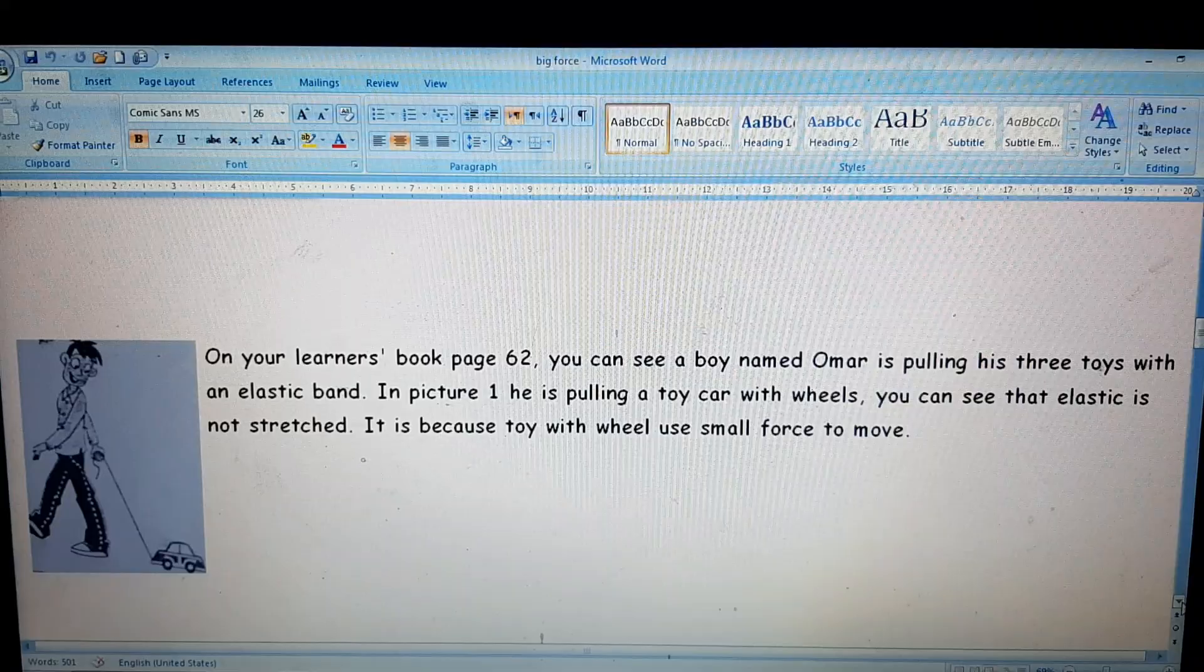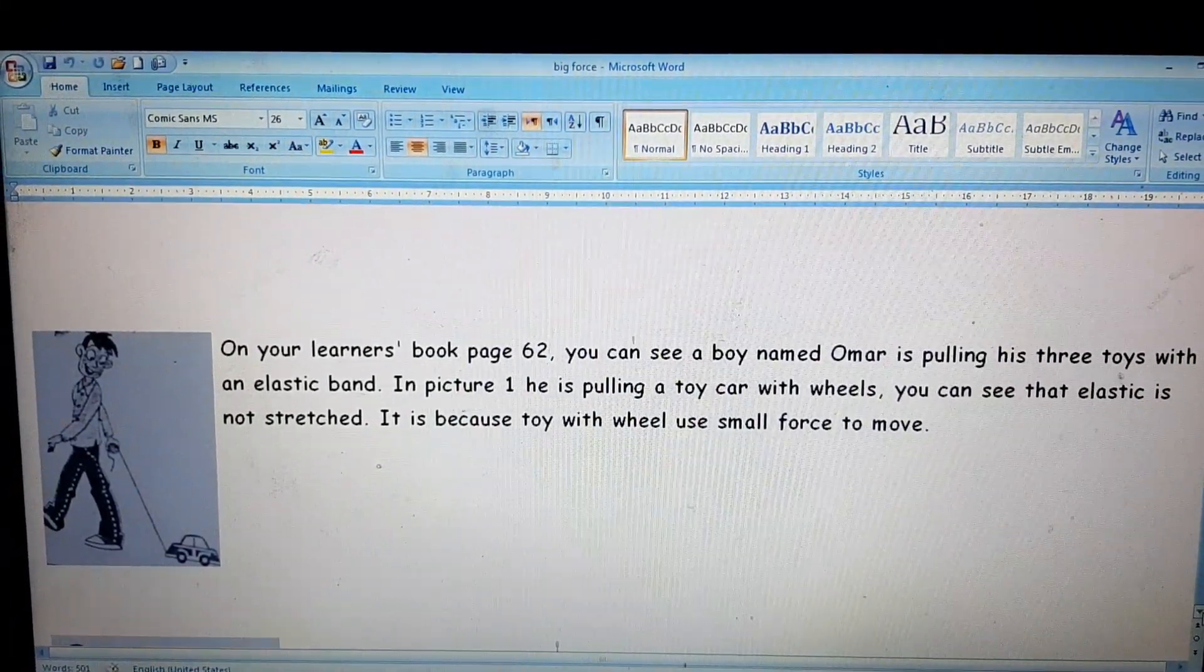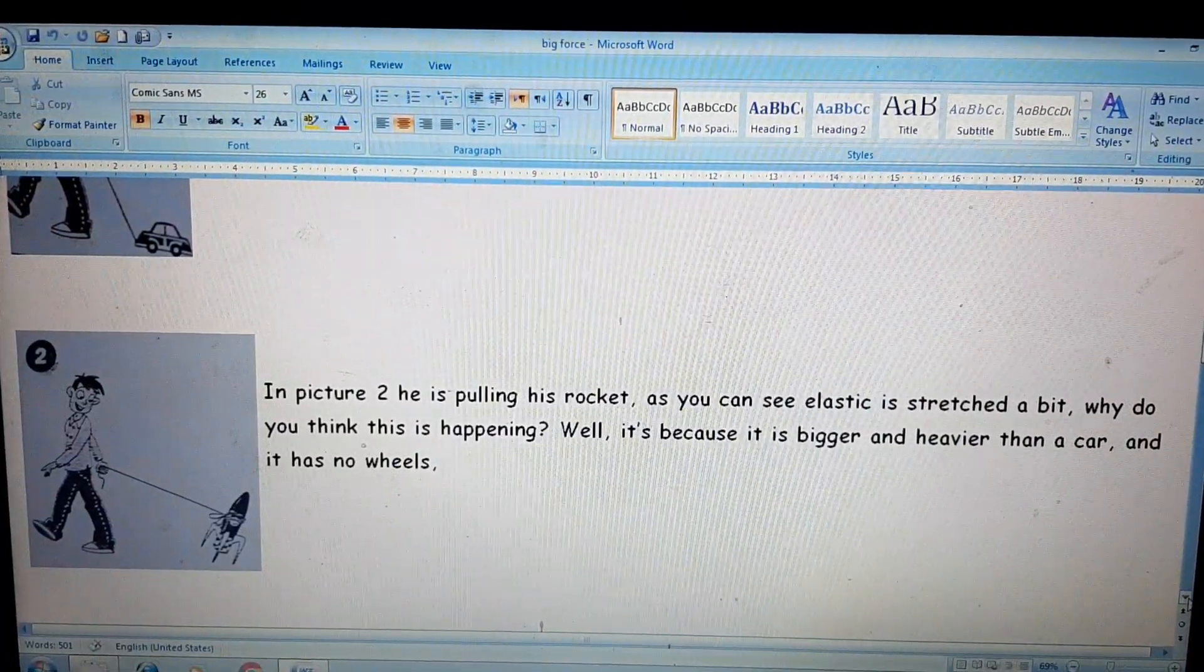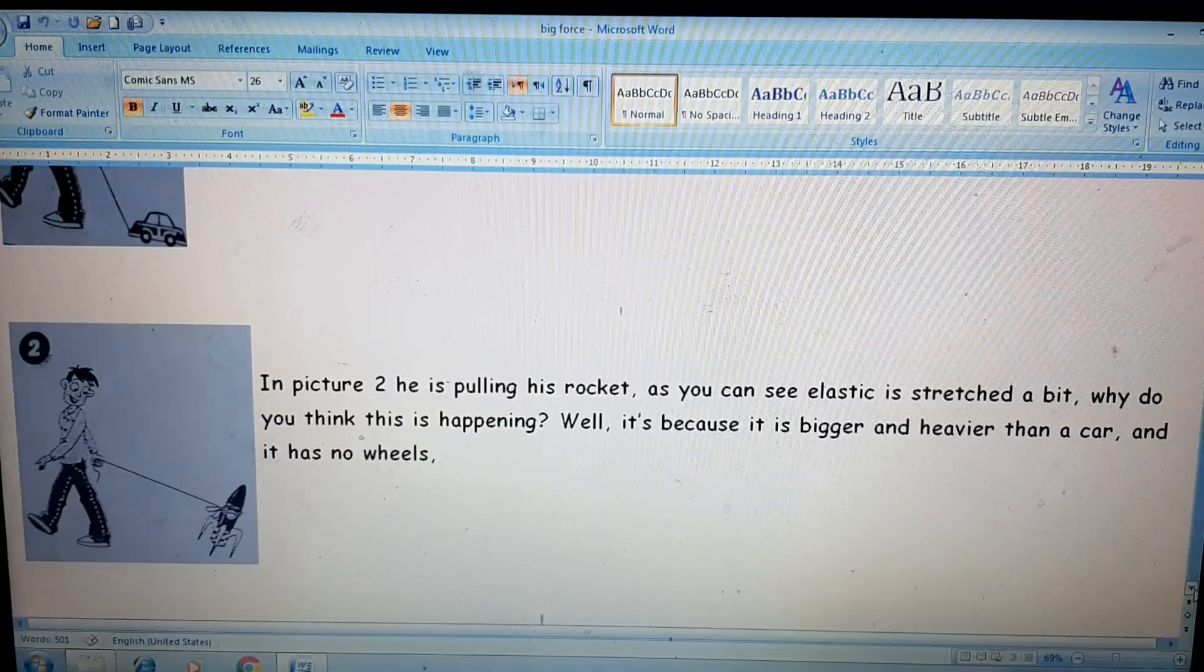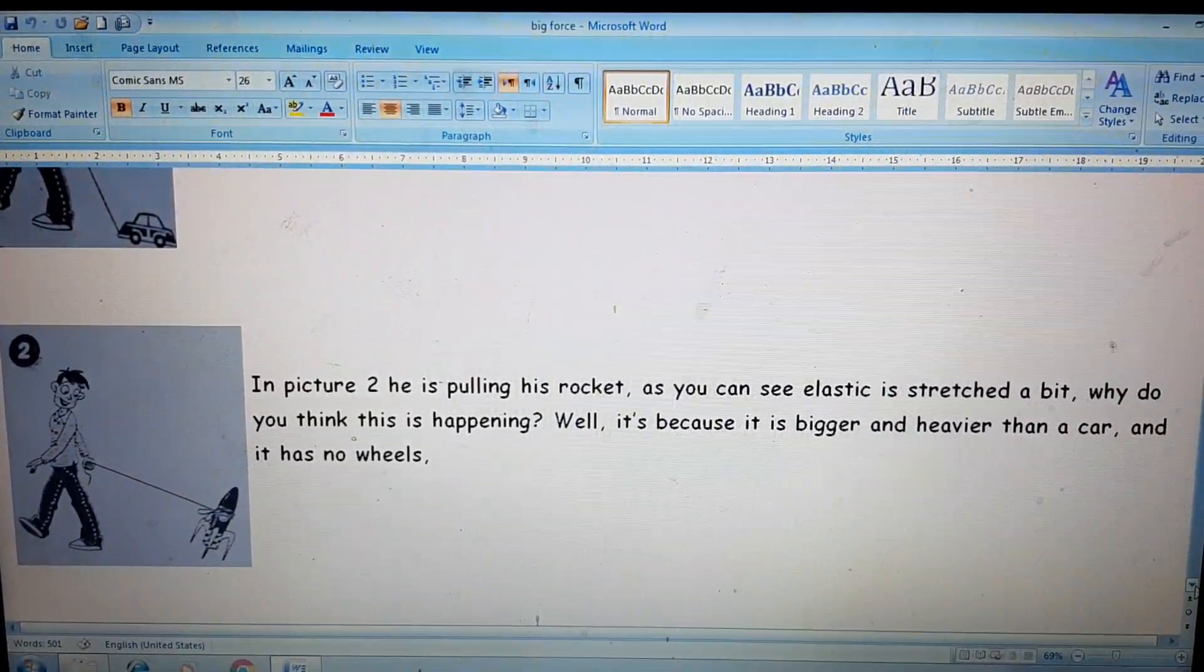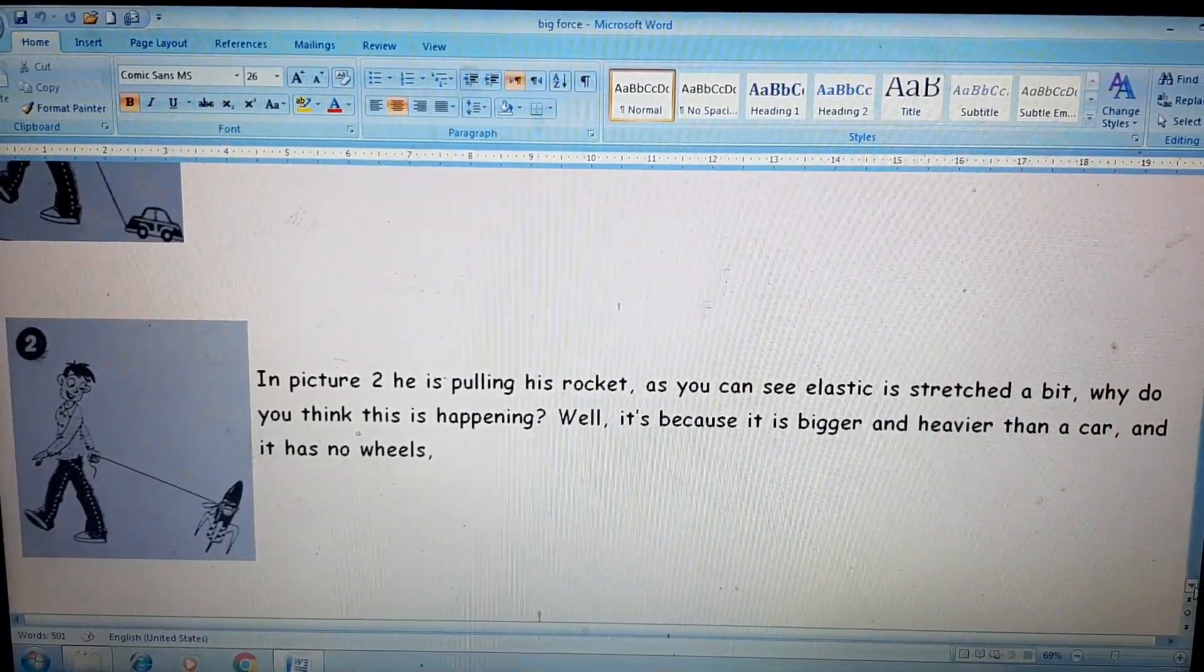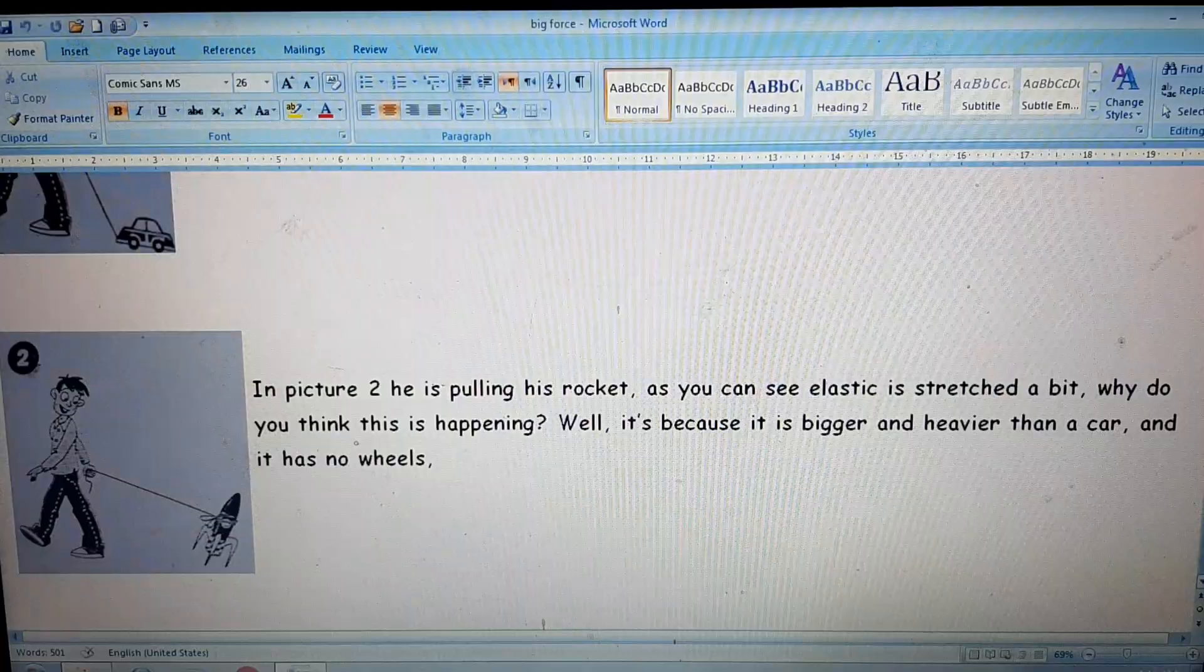In the second picture, you can see that he is pulling a rocket. As you can see here, the elastic is a bit stretched. Why do you think this is happening? Well, it is because the rocket is bigger and heavier than the car and it has no wheels. So it is using a bit more force to pull the rocket.